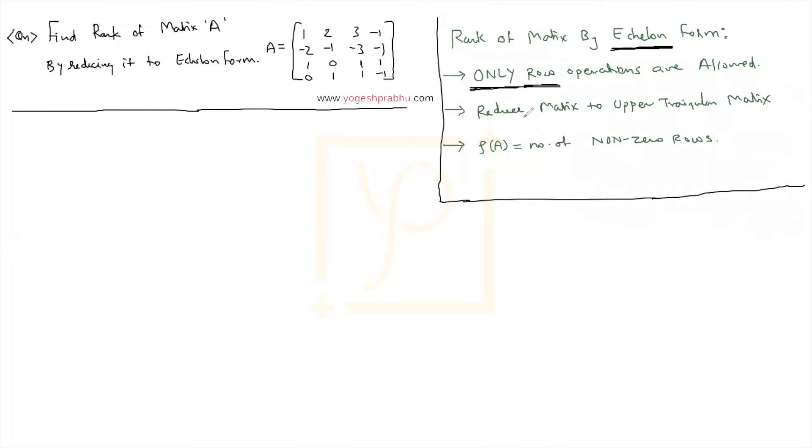Now our target over here is not to convert it into an identity matrix but we want to convert it as an upper triangular matrix. I hope you already know what is the upper triangular matrix.